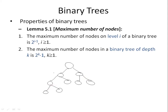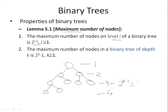Now let us look at properties of binary trees. The first lemma tells us about the maximum number of nodes. The maximum number of nodes on level i of a binary tree is 2^(i-1). For example, to find elements at level 3: 2^(3-1) = 2^2 = 4. So the maximum number of elements possible at level i is 2^(i-1).